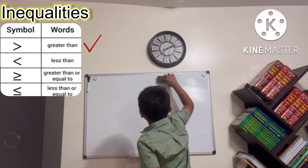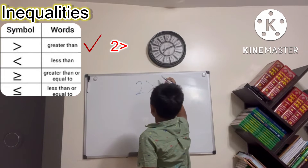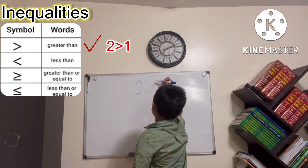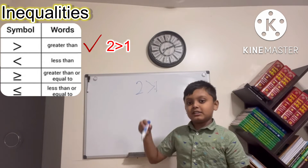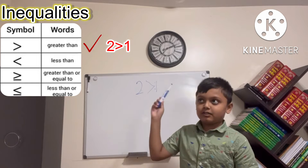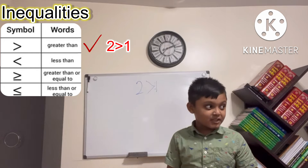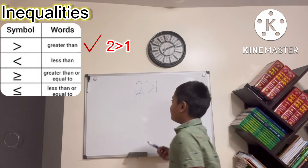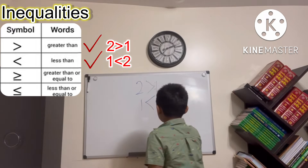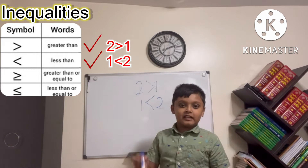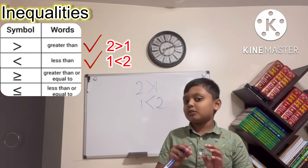We can also say two is greater than one. So greater than just means a number that is greater than the other number, which needs to be a smaller number. Since it's greater than, there's another symbol called less than — like one is less than two.